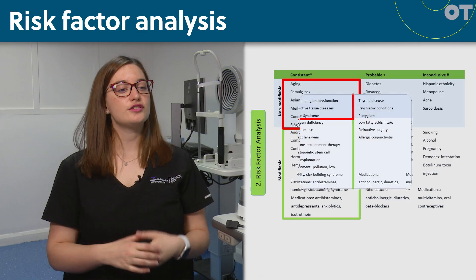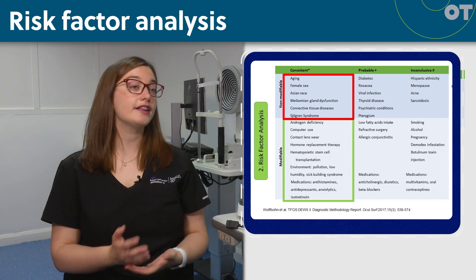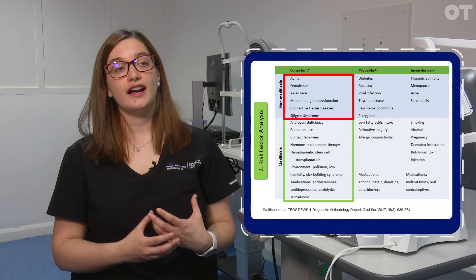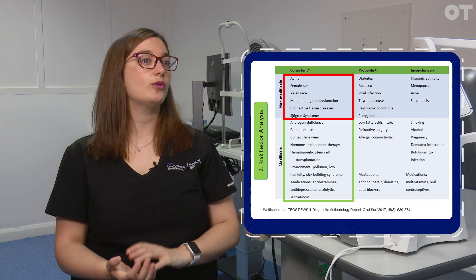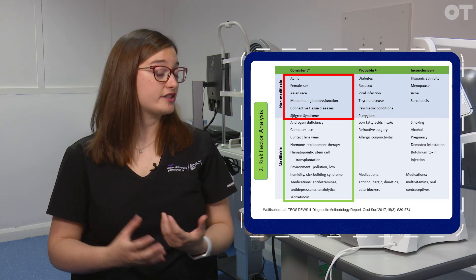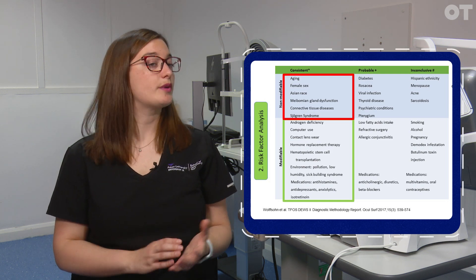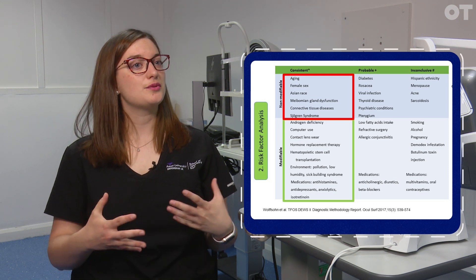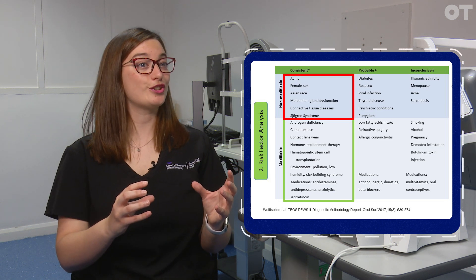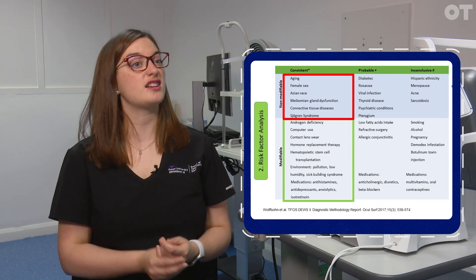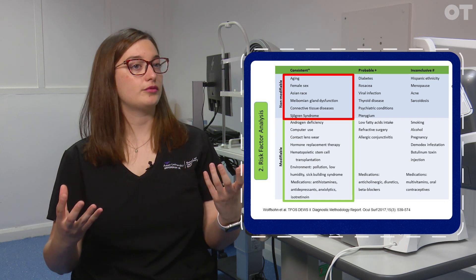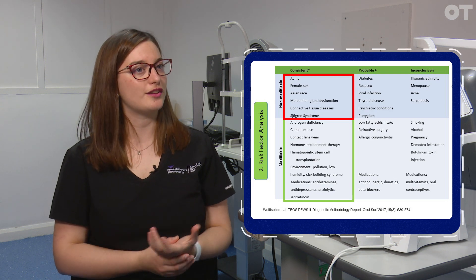Next we look at risk factors. There are two types: modifiable and non-modifiable. I always ask if they're working in dry environments — heating or air conditioning, in front of a computer. Modifiable risk factors include computer use, contact lens wear, hormone replacement therapies, androgen deficiency, and the environment. Medications are also modifiable — in collaboration with a GP, we can explore whether a medication causing dryness could be swapped for one with the same benefits but less dryness. Other risk factors are currently inconclusive.